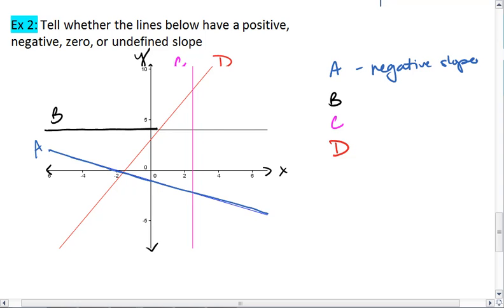Line B is a straight horizontal line, which means it has a zero slope.